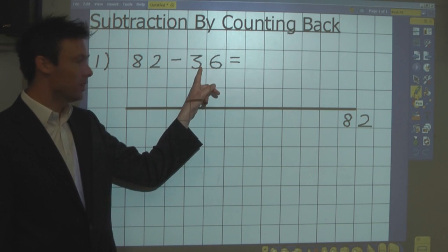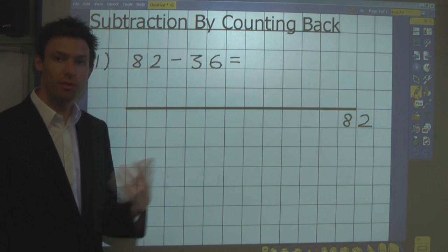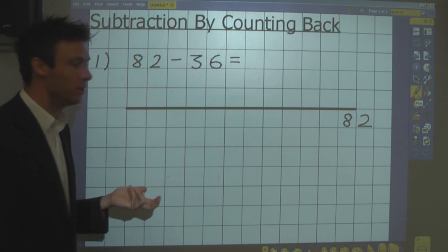And I'm going to take away 36, which is made up of 30 and 6, so I'm going to do that in stages.